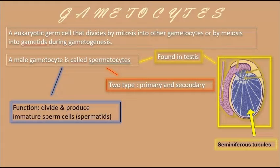Now moving along, we are going to talk about gametocytes. Gametocytes are eukaryotic germ cells that divide by mitosis into other gametocytes, or by meiosis into gametids during gametogenesis. A male gametocyte is called a spermatocyte. Spermatocytes are found inside the testis, specifically in the seminiferous tubules.